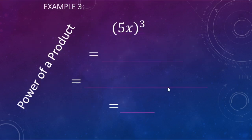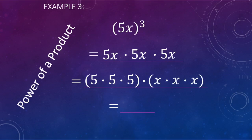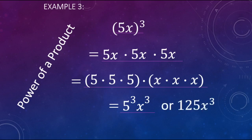For power of a product, here we have a product, 5 times x, raised to the 3rd power. So we're going to have 3 copies of 5x all being multiplied: 5x times a 2nd 5x times a 3rd 5x. Using the commutative and associative properties, that's 3 fives being multiplied times 3 xs being multiplied — 5 to the 3rd power times x to the 3rd power. You could also write it as 125x cubed, which is equivalent.